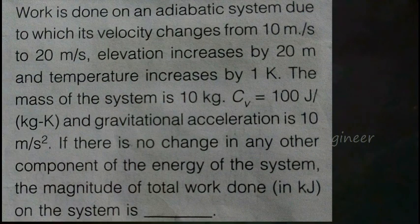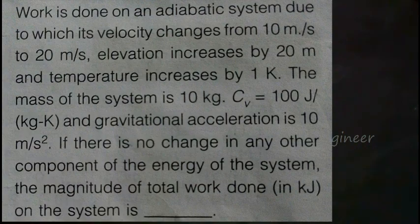Next problem: work is done on an adiabatic system, due to which its velocity changes from 10 to 20 m/s and elevation increases by 20 meters, so z2 minus z1 is 20 meters. Temperature increases by 1 Kelvin. The mass is given as 10 kg, and the Cv value is given along with the g value.